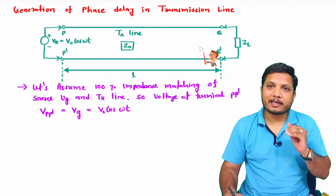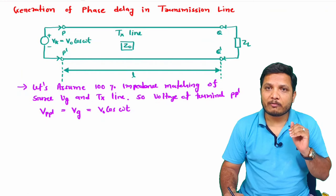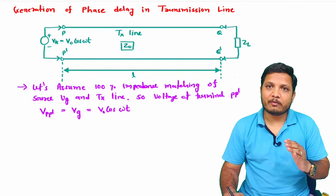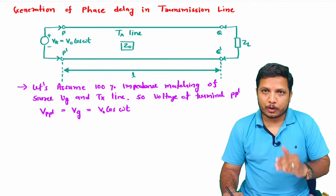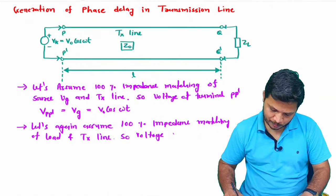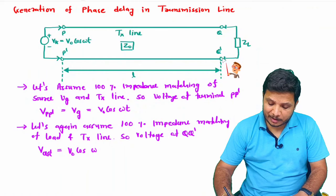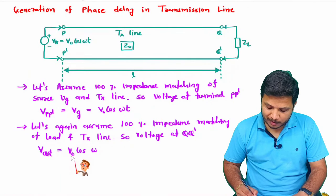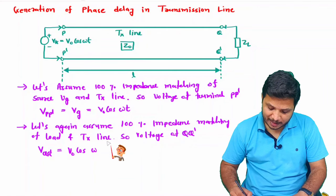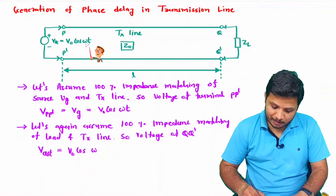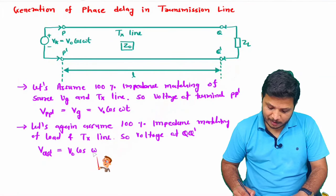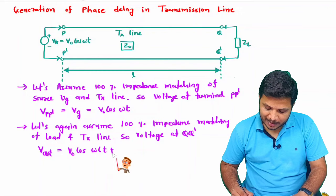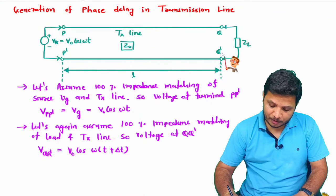Assuming 100% impedance matching of the load with the transmission line, we can have maximum signal transfer at the load. When the signal reaches QQ dash, the voltage will not decrease due to 100% matching. However, time is required to travel from PP dash to QQ dash — the frequency remains the same but a time delay delta t gets added.